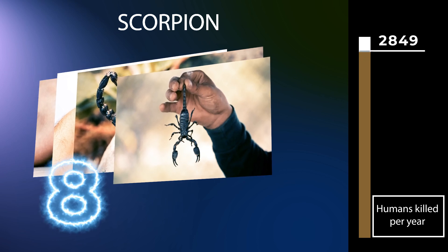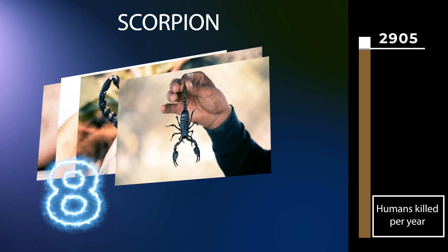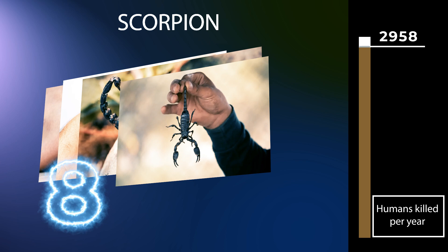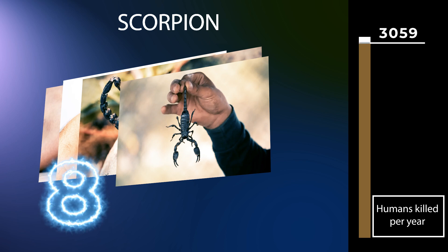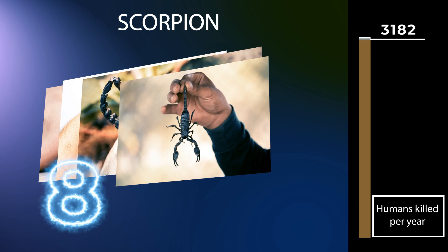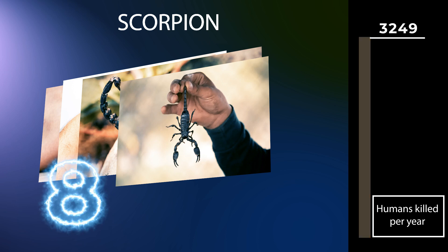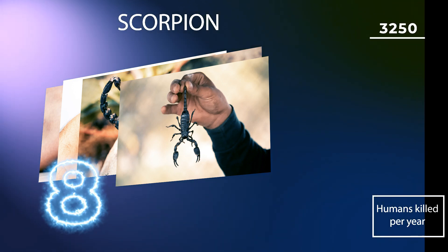About 25 species, fewer than 1%, have venom capable of killing a human, which happens frequently in parts of the world where they live, primarily where access to medical treatment is unlikely.